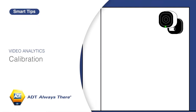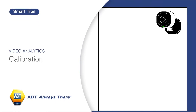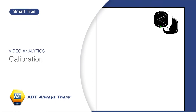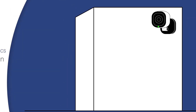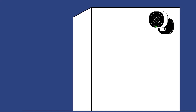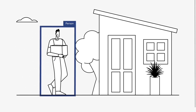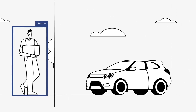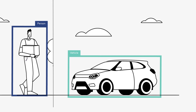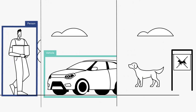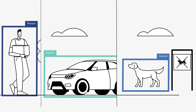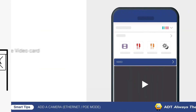Before creating a video analytics rule on a camera, you must first calibrate the camera. This step allows the camera to more accurately classify people and other detected objects. We also recommend running this calibration process if the camera's field of view has changed after the installation.